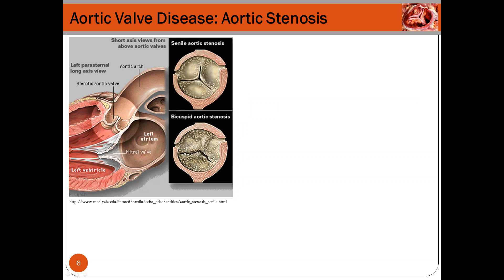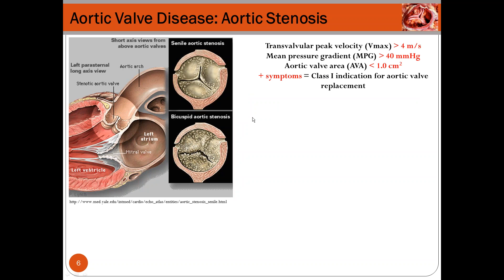Looking at the guidelines, aortic stenosis is defined as the partial narrowing of the natural opening of the aortic valve, so the opening is reduced and less area is available for flow. Severe aortic stenosis is defined when the transvalvular peak velocity is above 4 meters per second, mean pressure gradient above 40 mmHg, and aortic valve area below 1 cm². These three parameters, plus symptom expression, are a Class 1 indication for aortic valve replacement.